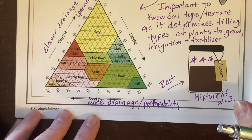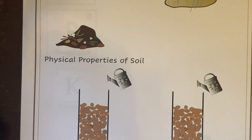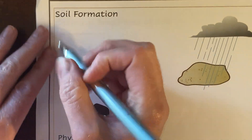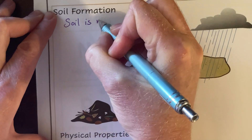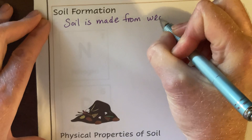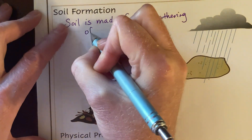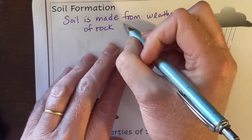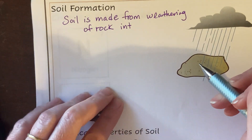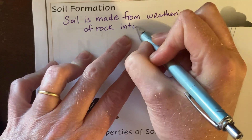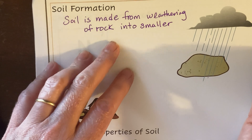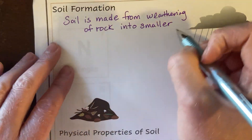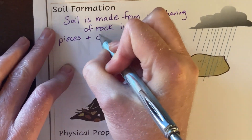So soil is formed through a couple of different methods. We have three main ways to form soil. First, it's made from the weathering of rock — the rock breaks into different, smaller pieces. Those smaller pieces of rock form dirt, but then other things make it into soil. So it's rock into smaller pieces, plus the decomposition of living things.